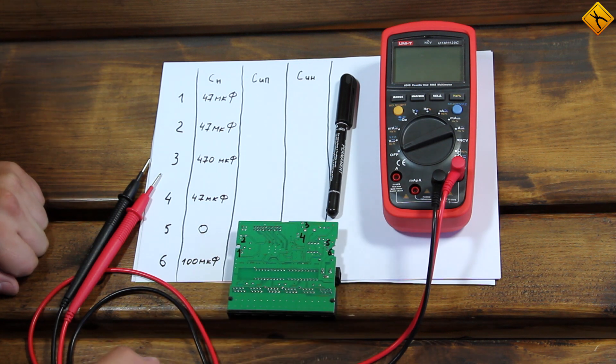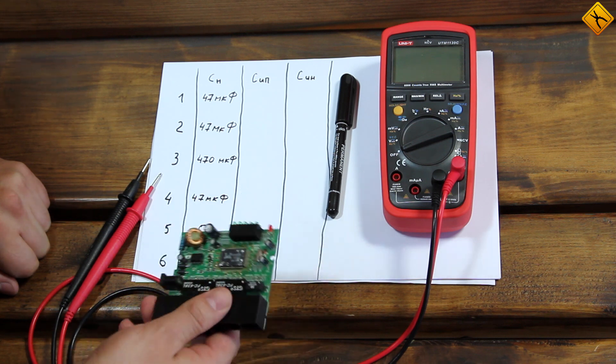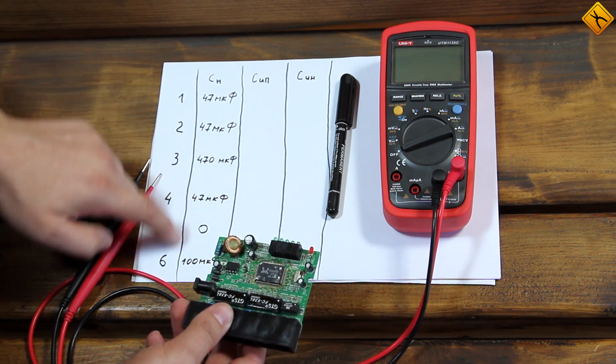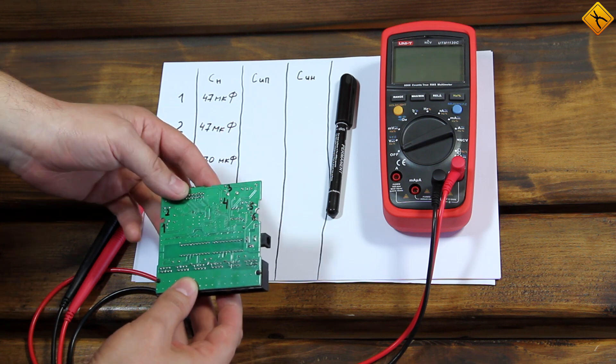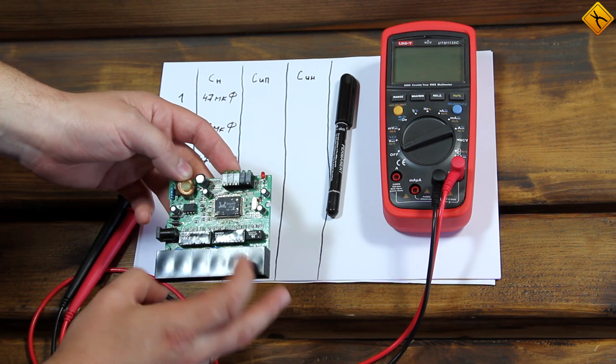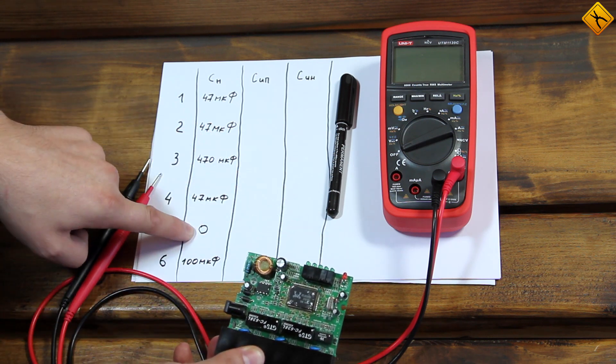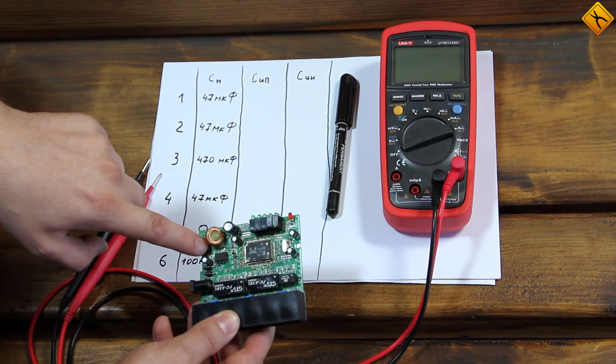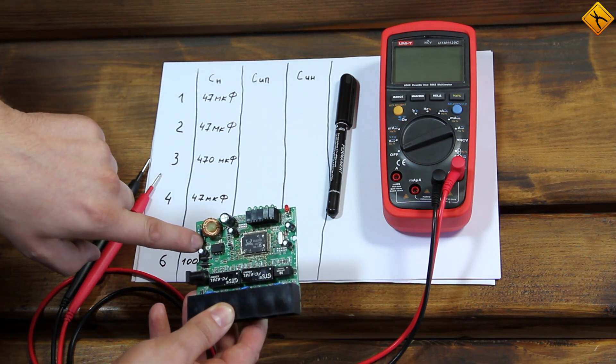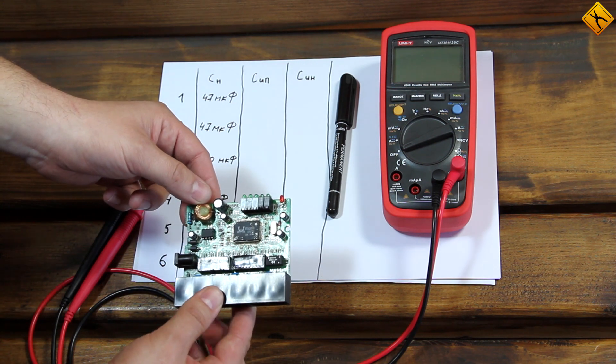We will conduct our measurements in different phases. I have already completed the first one by writing down all of the nominal capacitance values in the points where measurements will be taken. There's one exception. There is no capacitor in point five, as it has been previously removed. Just for kicks, we will measure the capacitance in this point as well.